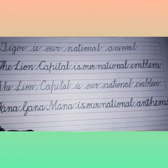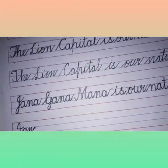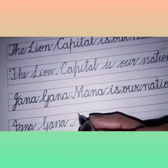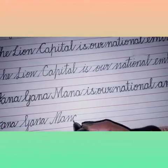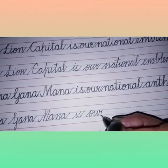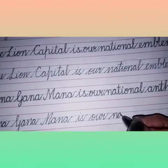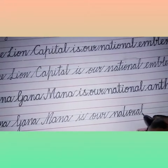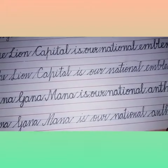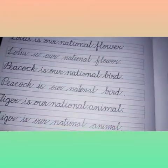We will repeat the same sentence in the next row: Jana, Gana, Mana, is, our, national, anthem, A-N-T-H-E-M. National anthem. Okay, so children we have read and written a few sentences about our national symbols.